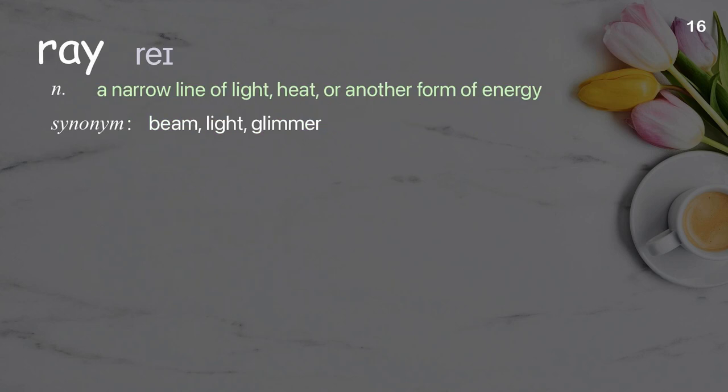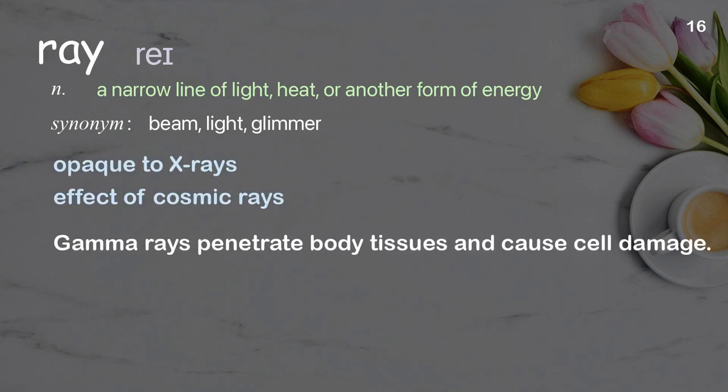Ray: A narrow line of light, heat, or another form of energy. Examples: Opaque to X-rays. Effect of cosmic rays. Gamma rays penetrate body tissues and cause cell damage.